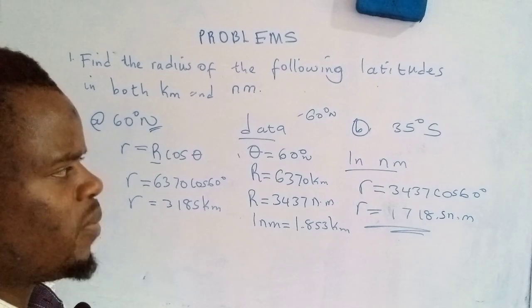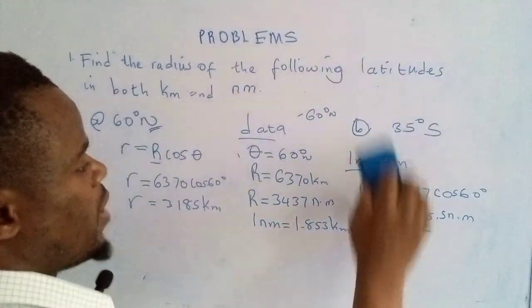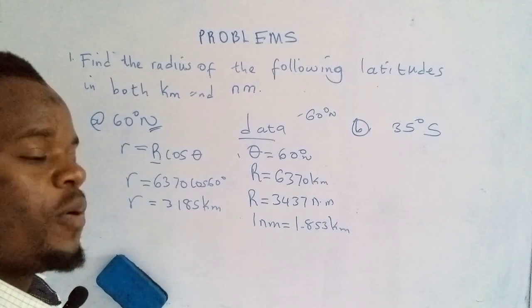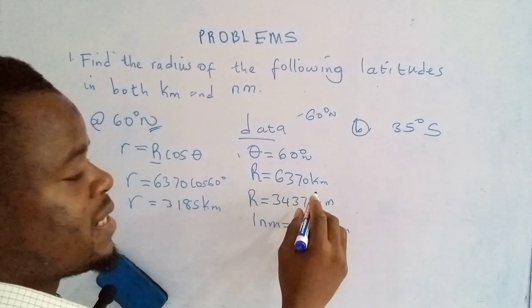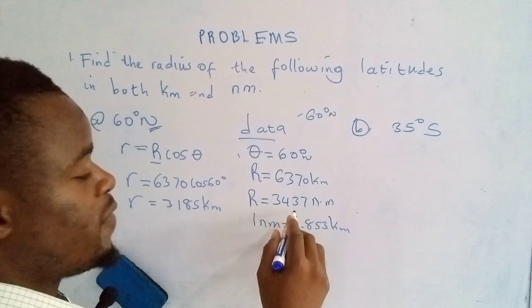This one will be more like consolidation, so that you're able to do things on your own. We know that the radius of the Earth is 6370 in kilometers. Then in nautical miles, that's 3437.